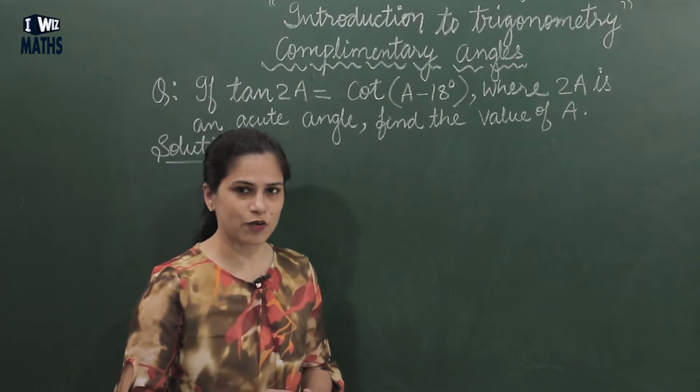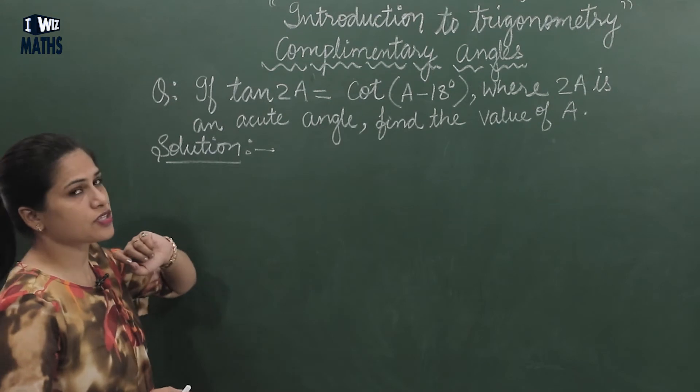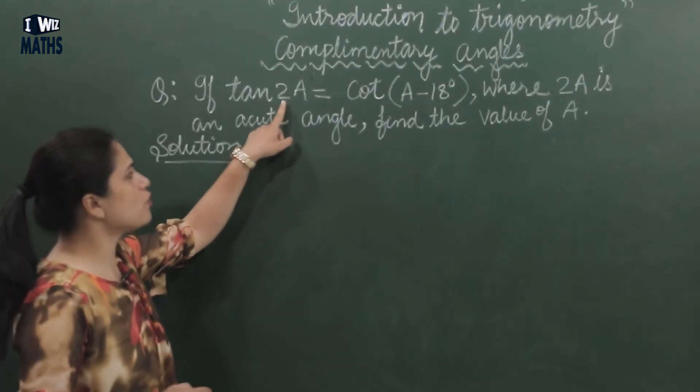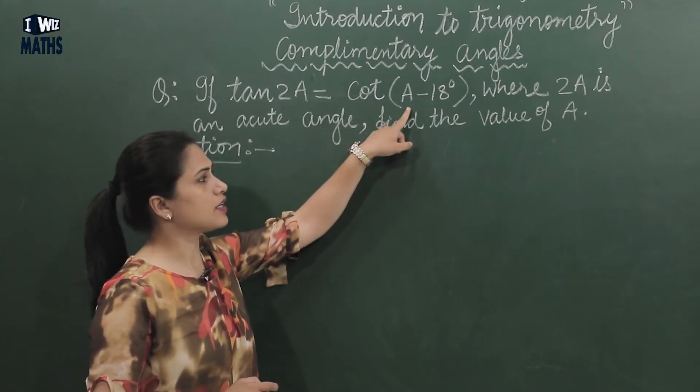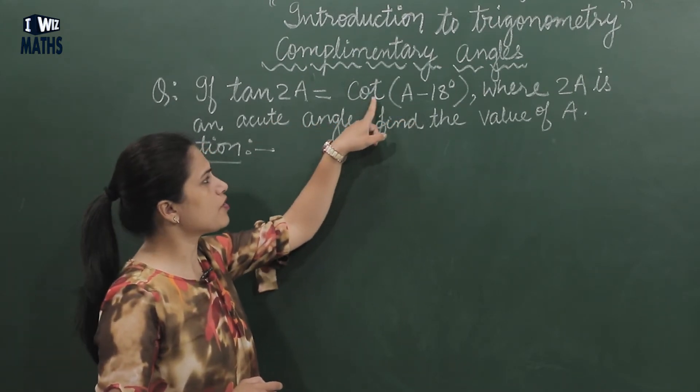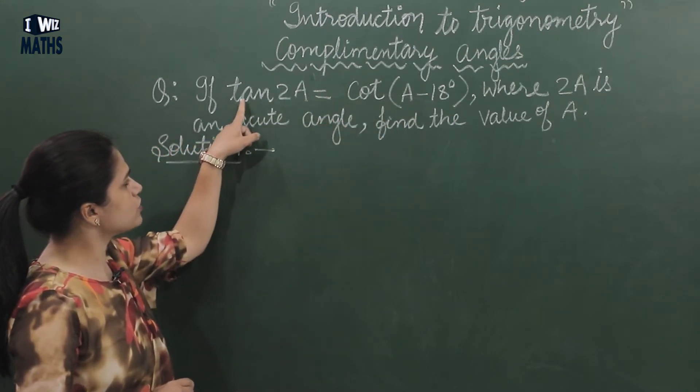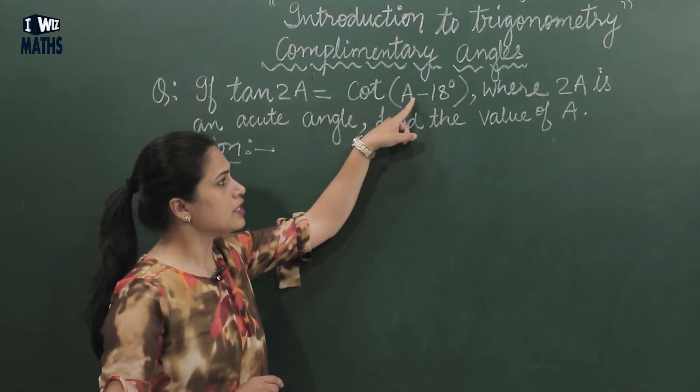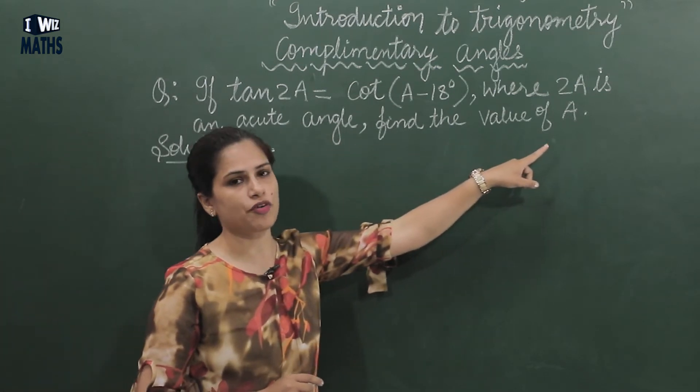Let's move to our next question, and the concept we'll apply is the same - complementary angles. So here our question is: if tan 2A, here the value of theta is 2A, equals cot(A - 18°), this is also another theta, meaning whatever is written with the function is considered an angle. So we're given tan 2A equals cot(A - 18°), where 2A is an acute angle, then find the value of A.